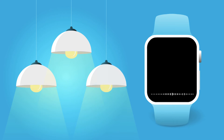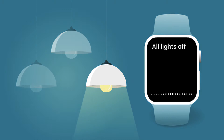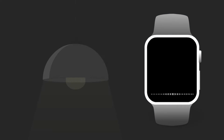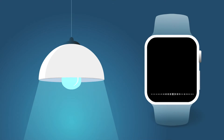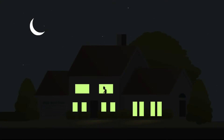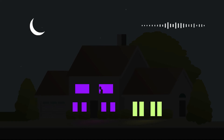To turn off all your lights, just say "All Lights Off." To set the color of a lamp, say "Turn Desk Blue" — or simply say "Desk Blue." To set all your lights to a specific color, say "All Lights Purple."